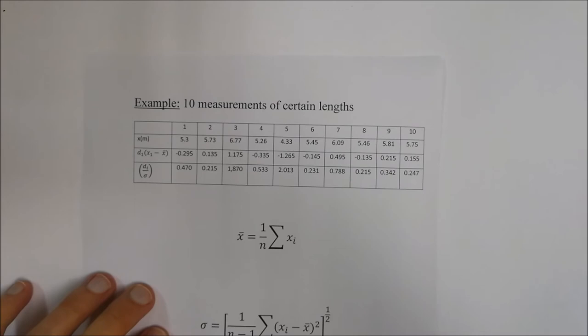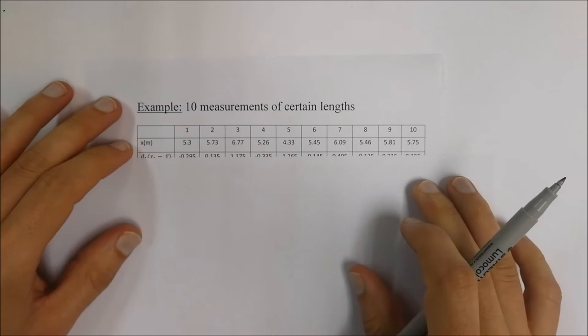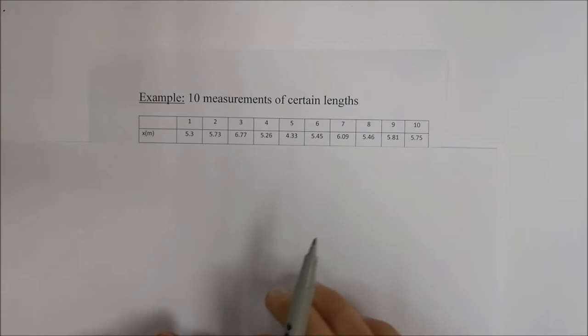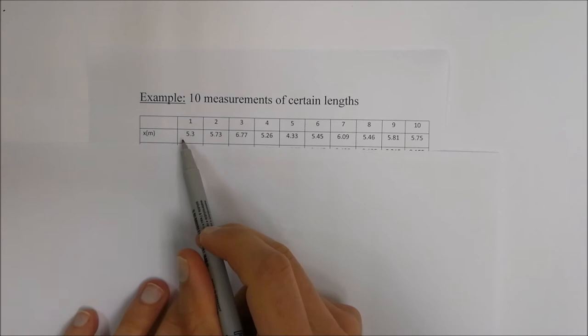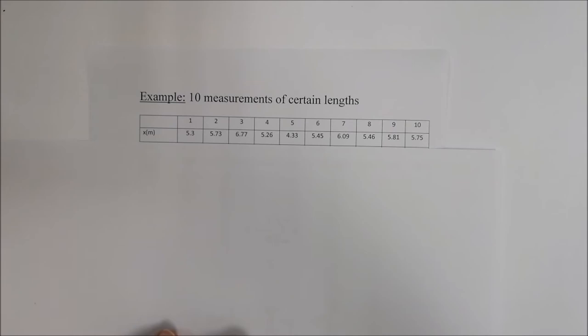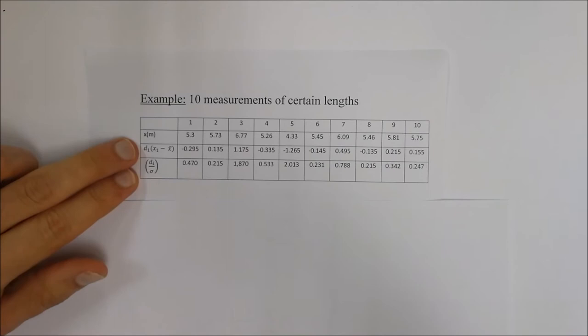Let's work through an example. Ten measurements of a certain length have been taken in meters. We have readings numbered one to ten. It's always advisable to put your data into a table — either going top-down or left-to-right — to prevent confusion and calculation errors. Ignore the two extra rows for now; we'll get back to them.